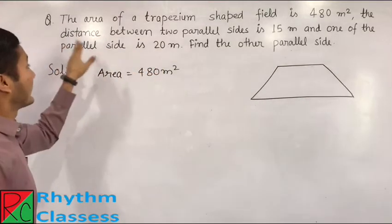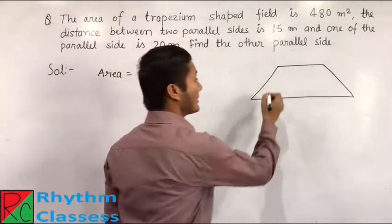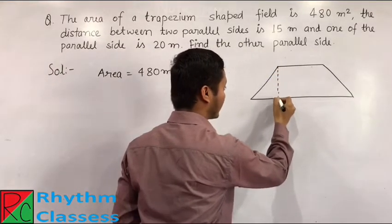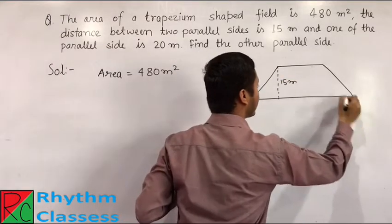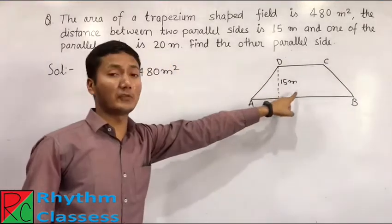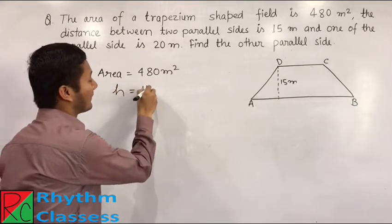Now, the distance between two parallel sides is 15 meter. That means this distance will be 15 meter. This is a ABCD trapezium field and this distance is 15 meter. That means we have height of the trapezium is 15 meter.